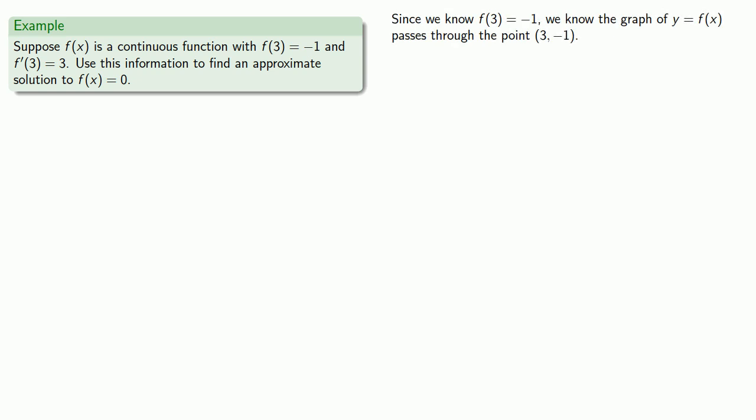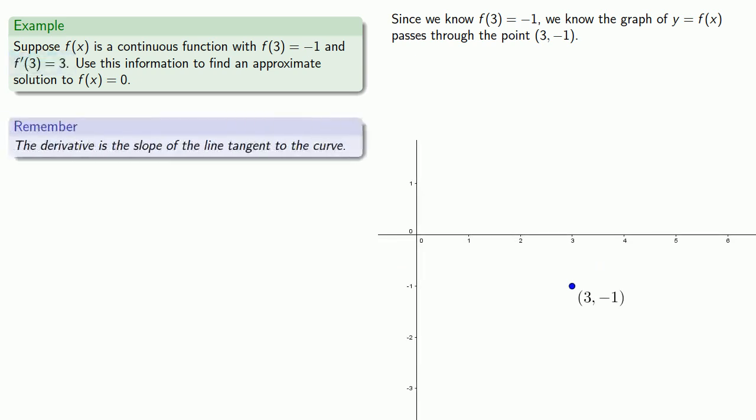we know the graph of y = f(x) passes through the point (3, -1). But we're also given the derivative at 3. The thing to remember is that the derivative is the slope of the line tangent to the curve.